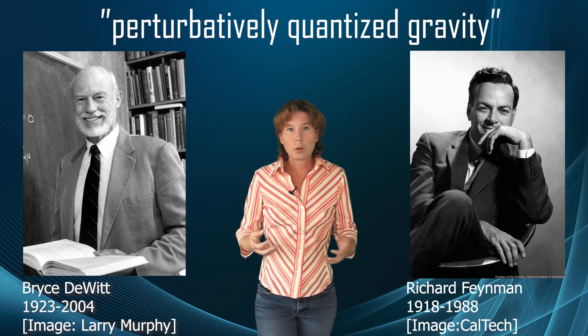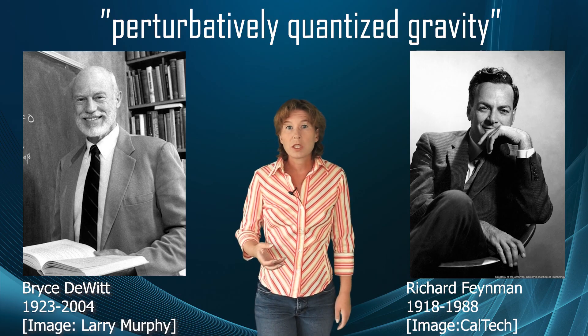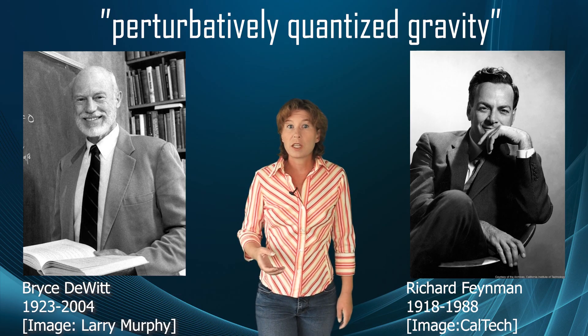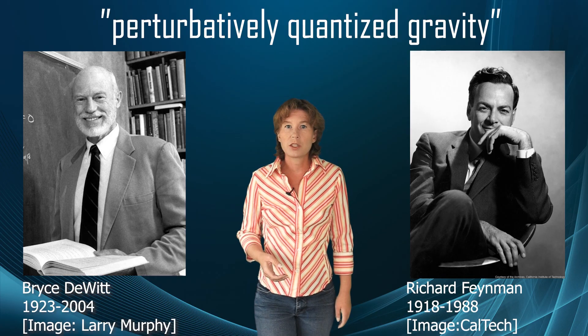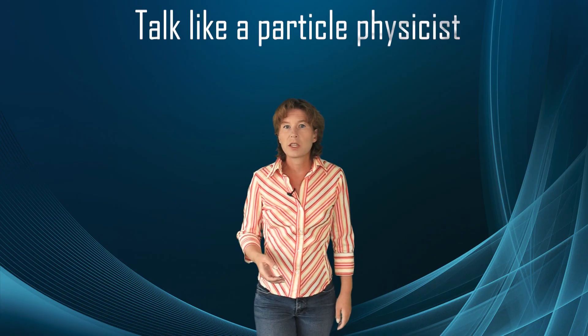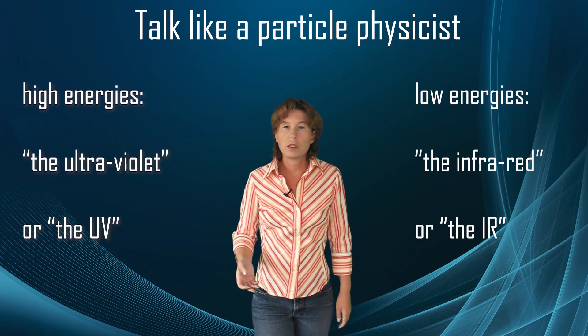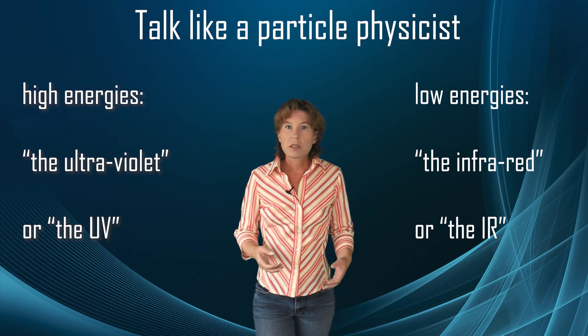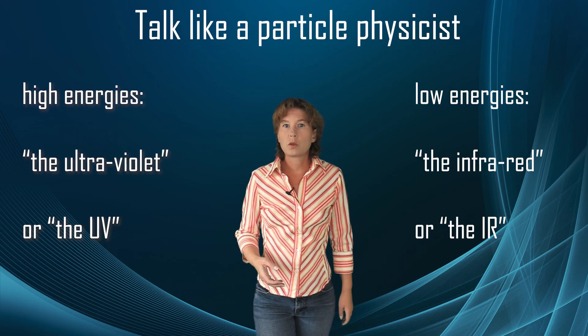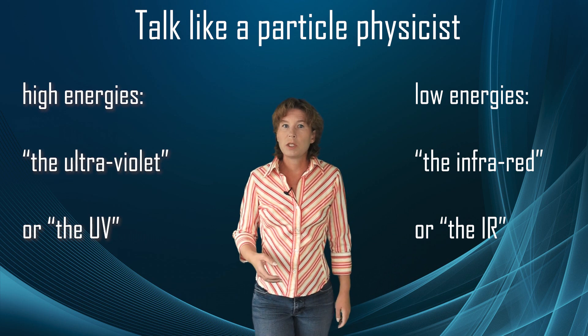The problem is not just to quantize gravity per se — you want to quantize it and get a theory that does not break down at high energies. Because energies are proportional to frequencies, physicists like to refer to high energies as the ultraviolet, or just the UV. Therefore, the theory of quantum gravity that we look for is said to be UV complete.